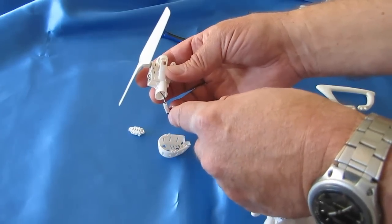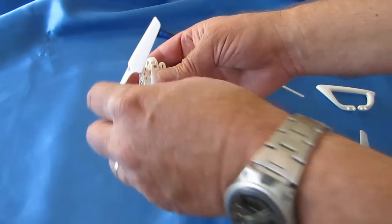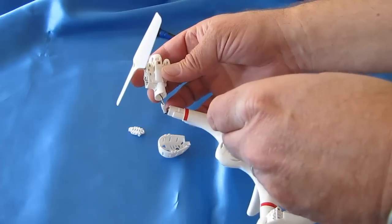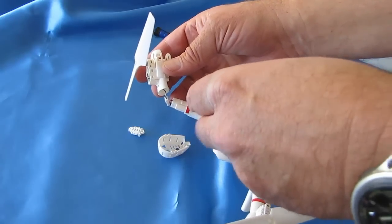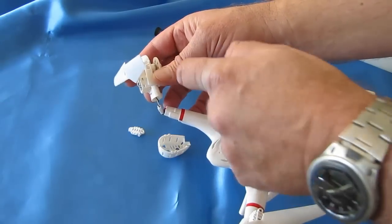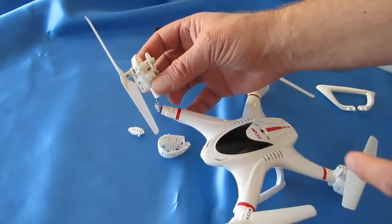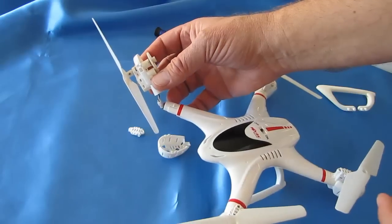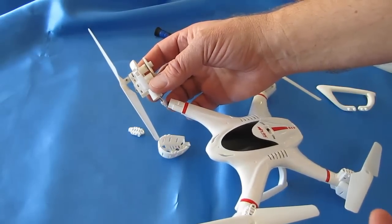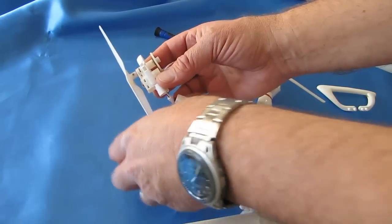These motors run about $3.50 each on AliExpress, I believe. I've included a link somewhere on RC Groups where to get them. Very cheap motors. Other components for this quadcopter are also available currently on AliExpress. I guess this is a popular quadcopter in China, so you can easily find parts for it.